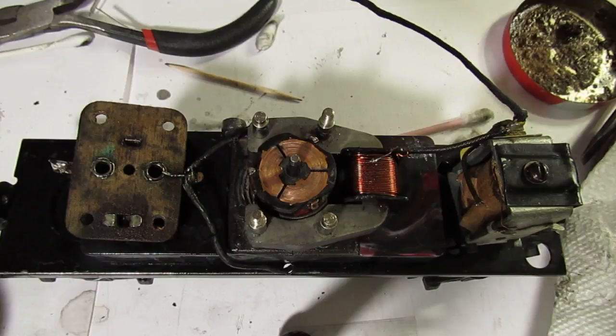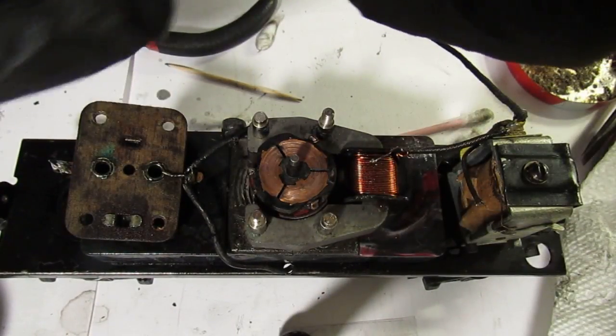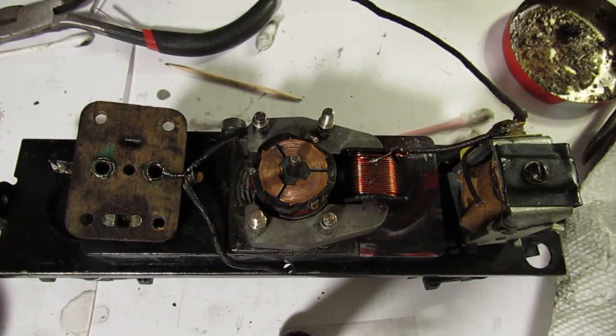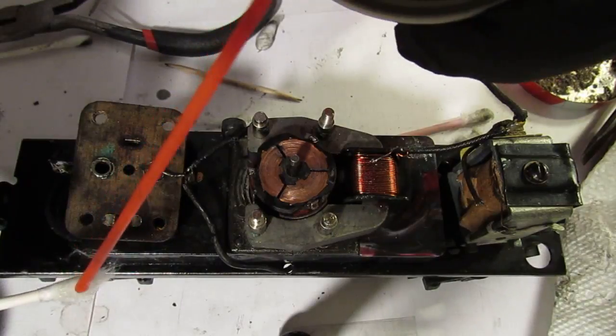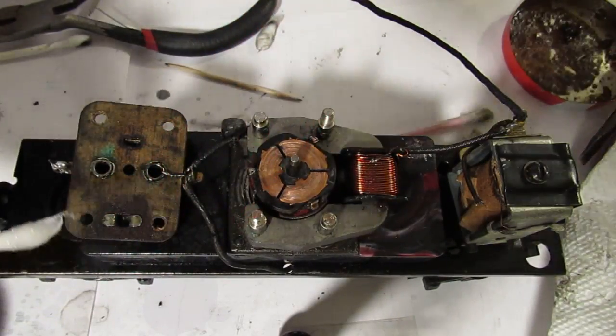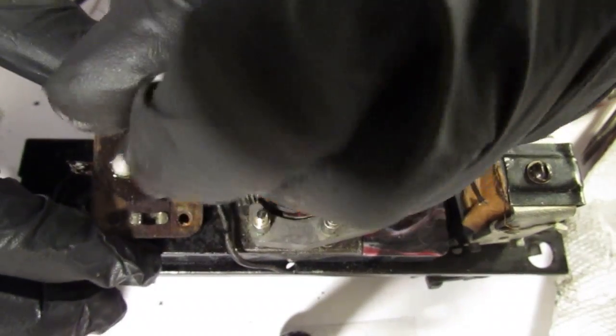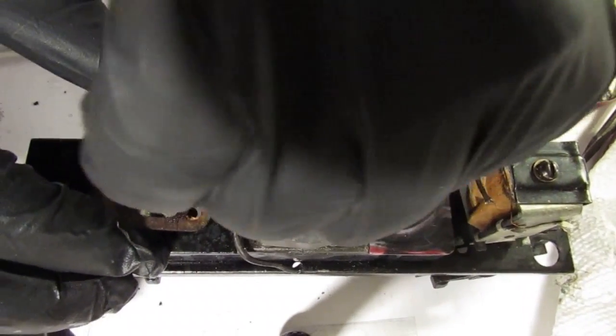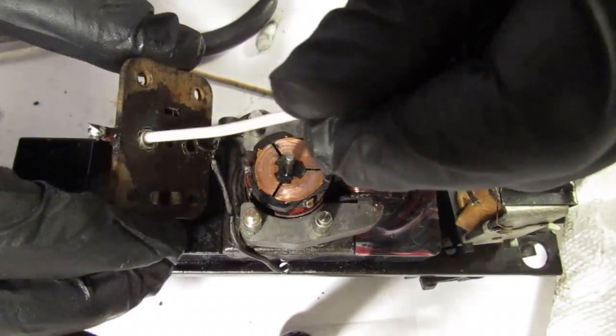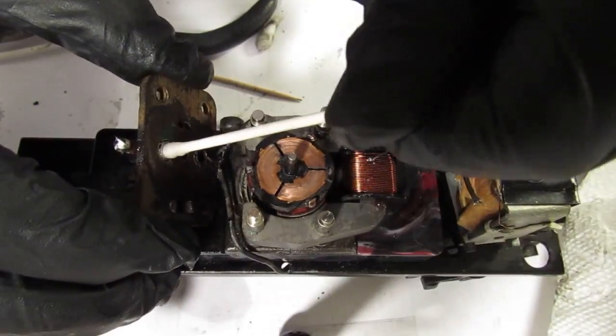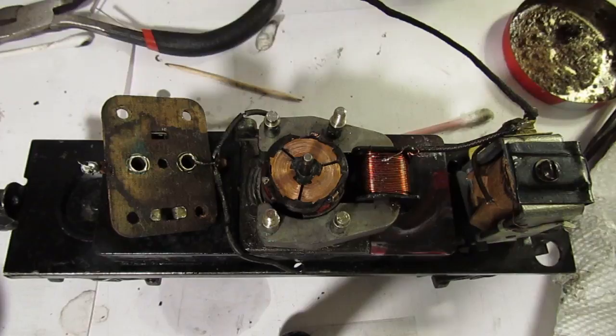Take one of your Q-tips and kind of strip it down as far as you can. Take your CRC, spray it directly on the Q-tip, and stick it directly down in that hole as far as you can and clean all that gunk. We want to get in there all the way to the end.